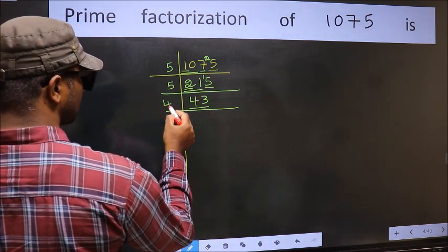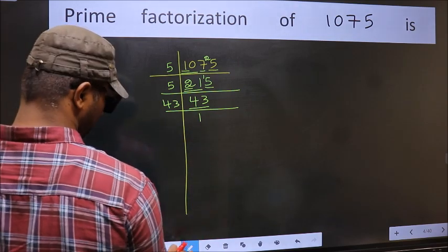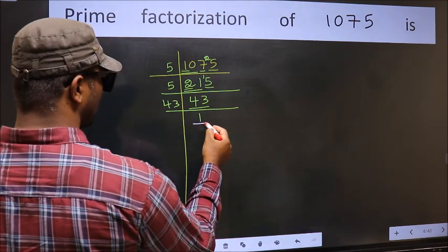43 is a prime number, so 43 once is 43. So we got 1 here.